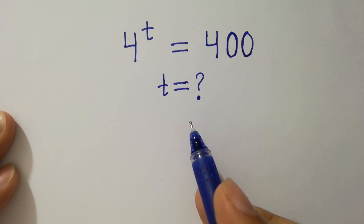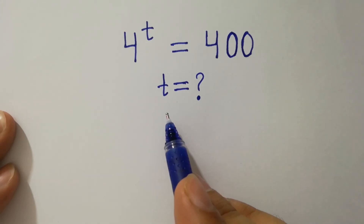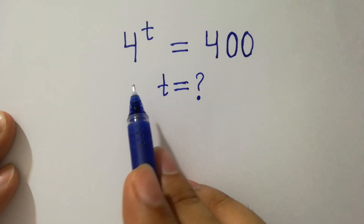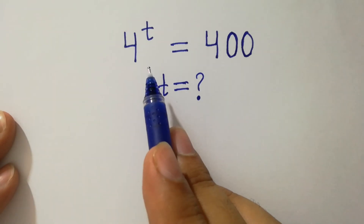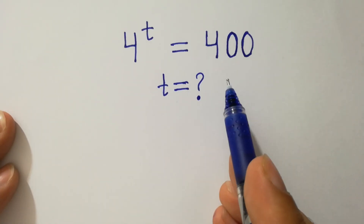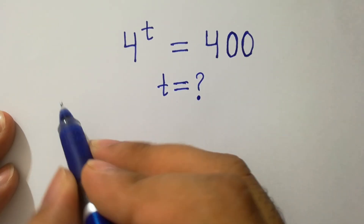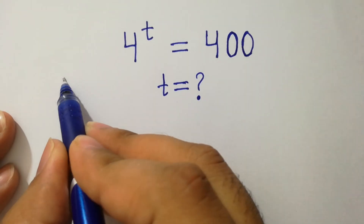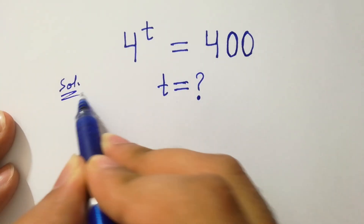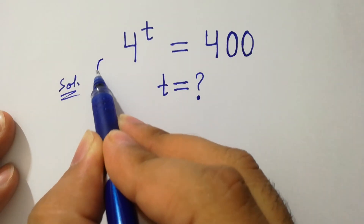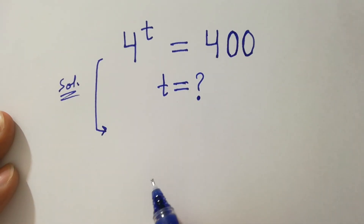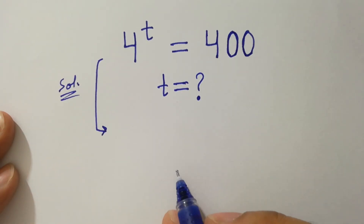Hello friends. Find the value of t if 4 to the power t equals 400. Let's have a solution. To solve this problem, take log on both sides.